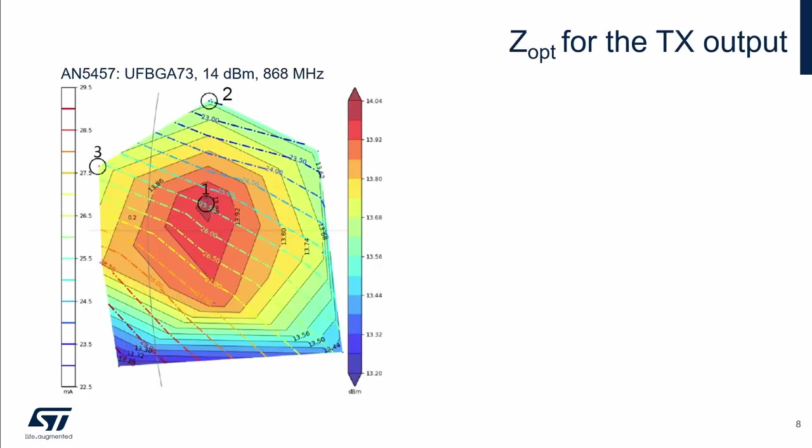For our parameters—BGA package, 14 dBm output power, and frequency 868 MHz—we can use load impedance measurement from the application note. We can see that a maximum power of 14 dBm is achieved when the optimum load impedance is around 12 plus J1 ohms. Current consumption is around 25 mA.